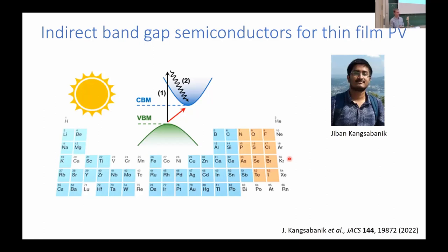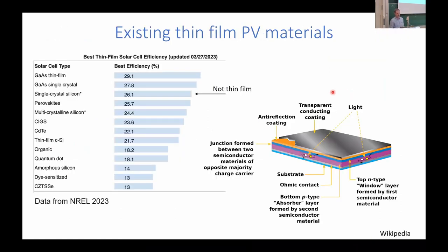Now let me move on to a screening study that Jibban, a postdoc in my group, did recently on indirect bandgap semiconductors for thin film photovoltaics. Thin film photovoltaics is dominated by the materials shown here — crystalline silicon is included just for comparison. Most of these materials are problematic because they contain poisonous, scarce, or expensive elements. So we would like to find materials that can harvest sunlight and provide high performance photovoltaics in a thin film geometry based on abundant elements. Everything studied so far has been direct bandgap semiconductors, since if you want a thin film that absorbs a lot of light, you would think to use a direct bandgap material.